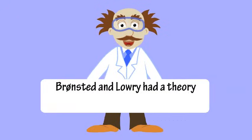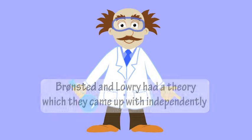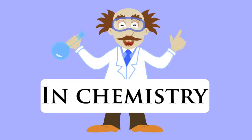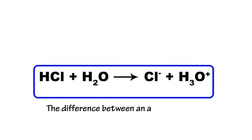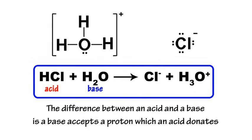Bronsted and Lowry had a theory which they came up with independently. In chemistry, the difference between an acid and a base is that a base accepts a proton which an acid donates.